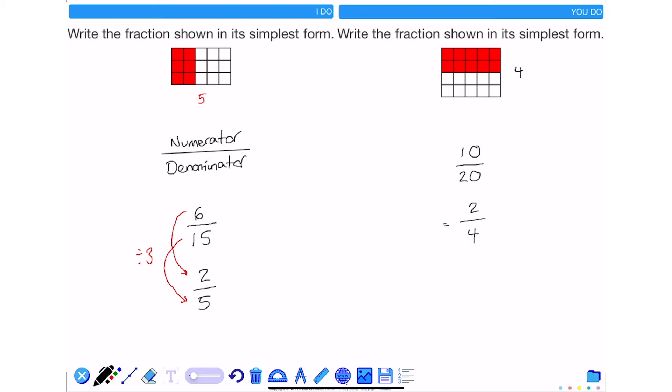The other alternative is to see that this shape can almost be seen as 2 halves, of which one of them is shaded in. This is now the fraction in its simplest form.